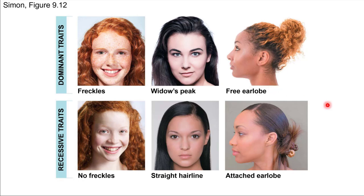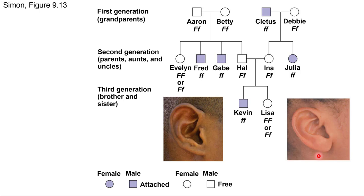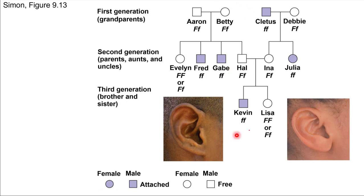Let's look at a pedigree to investigate the earlobe trait together. With pedigrees, males are always represented with squares and females with circles. We can also either shade in the shape or not, indicating whether the particular character we're interested in is present. In this case, we're looking at whether a person has attached earlobes or not — if a person has attached earlobes, we shade in that box. We start at the bottom and think backwards through the generations.